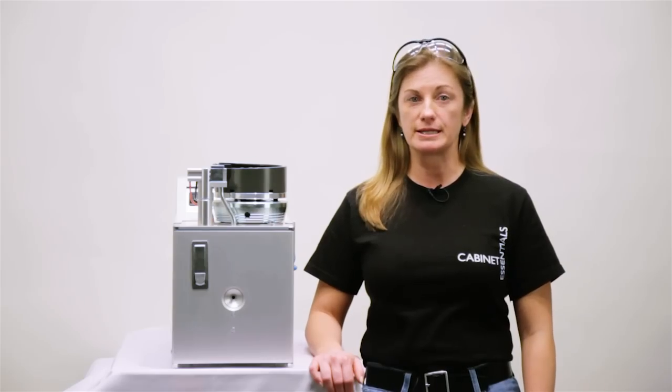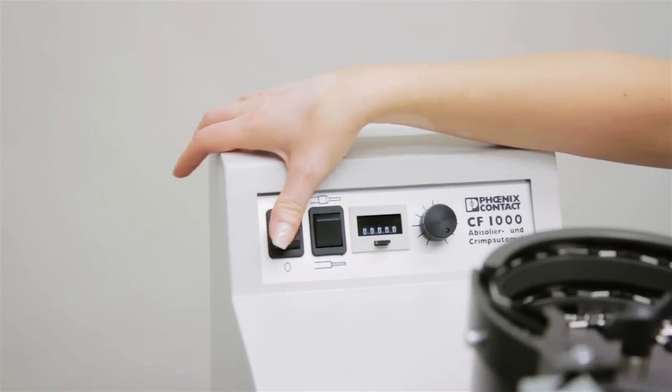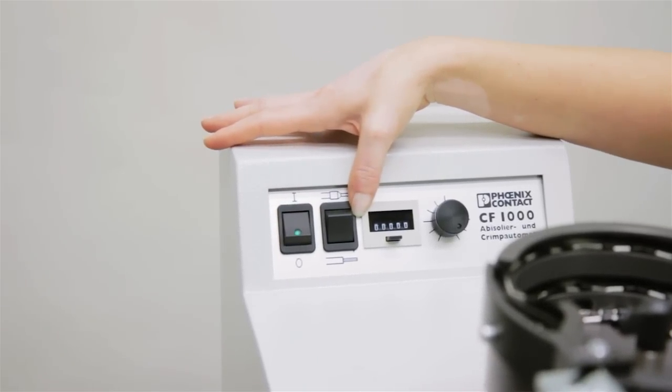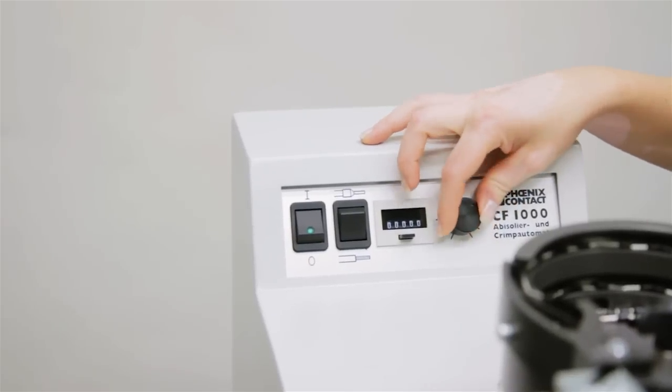Let me show you how easy it is. Power up the machine, select strip or strip and crimp, adjust the speed dial and reset the counter.